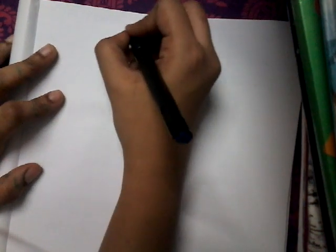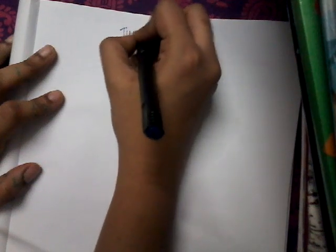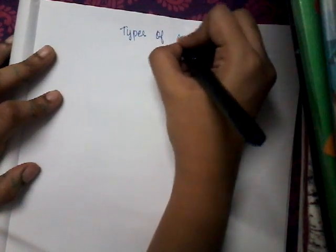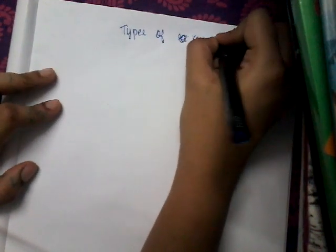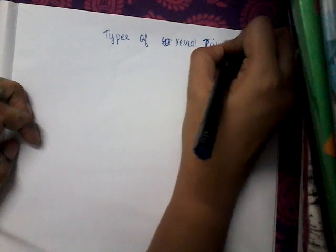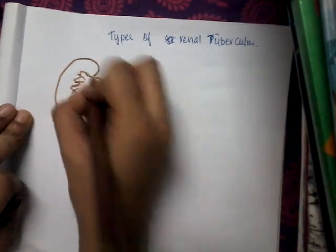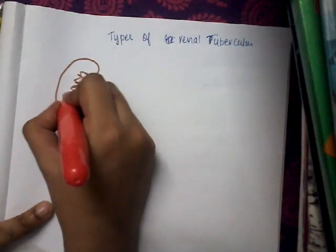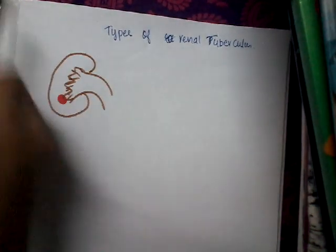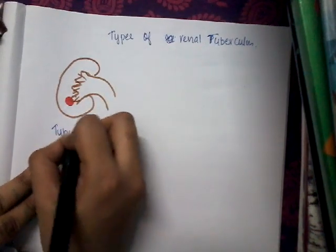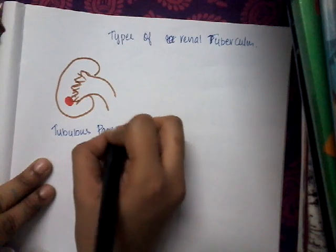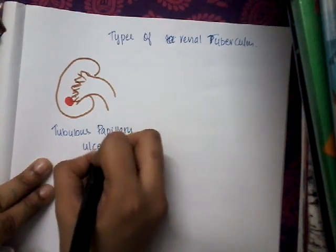Let us learn the different types of presentation of renal tuberculosis. The first type is tuberculosis papillary ulcer. Whenever there is a granuloma and ulcer formation in the renal papilla, that is called tuberculosis papillary ulcer.